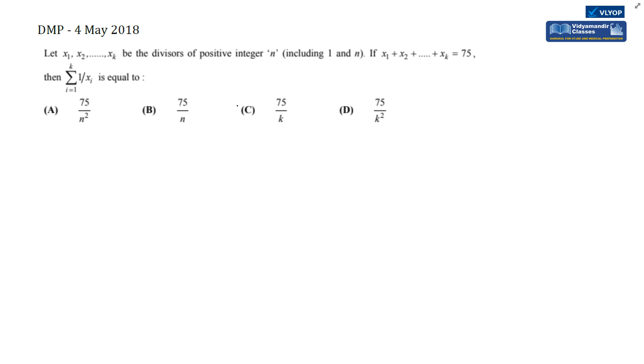The question is: let x1, x2, x3, x4, ... xk be the divisors of a positive integer n, including 1 and n. If x1 + x2 + ... + xk = 75, then the sum 1/x1 + 1/x2 + ... + 1/xk (sum of the reciprocals) is equal to what?